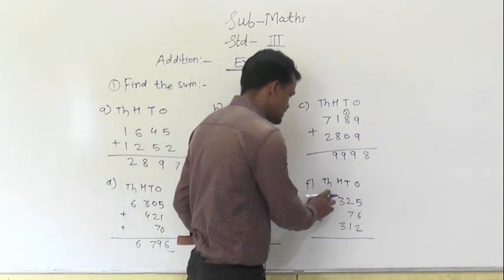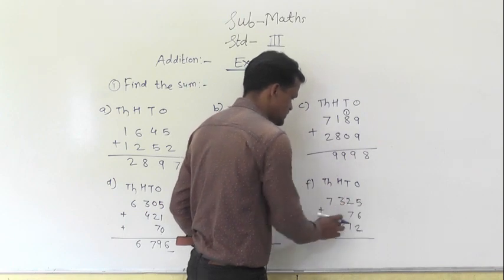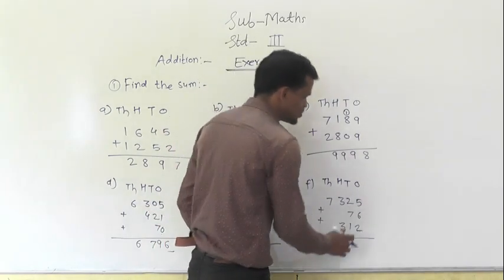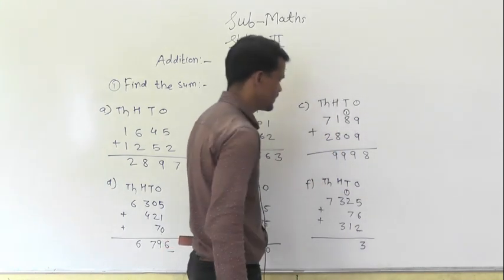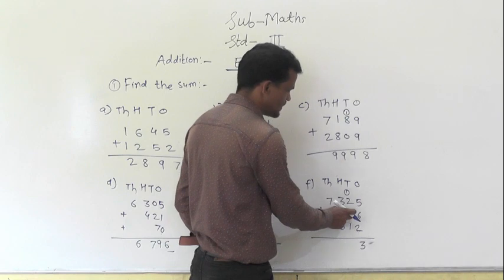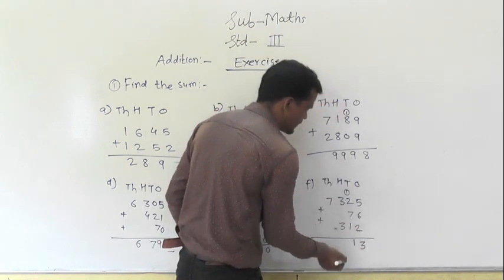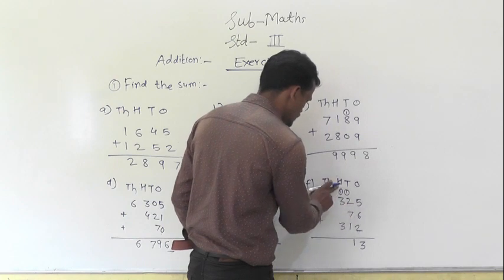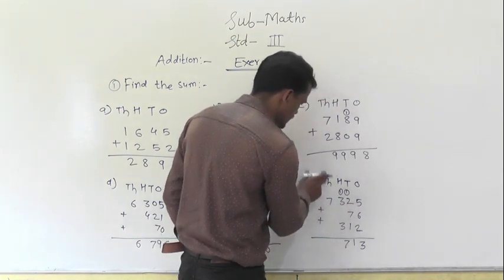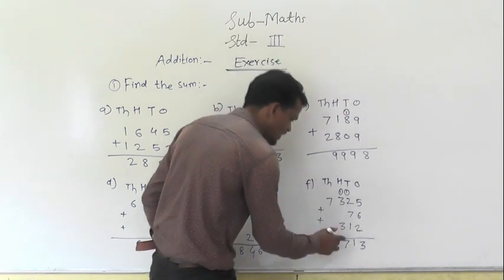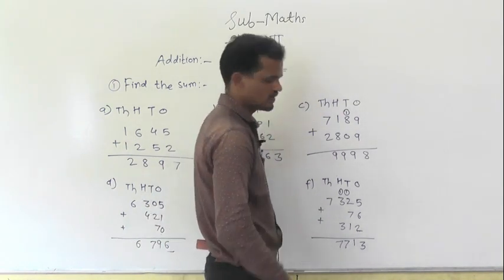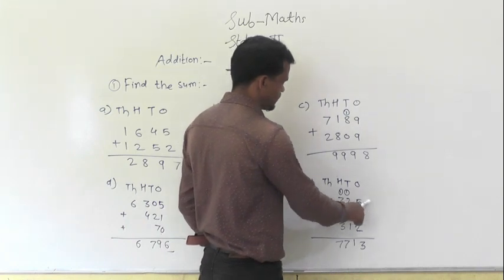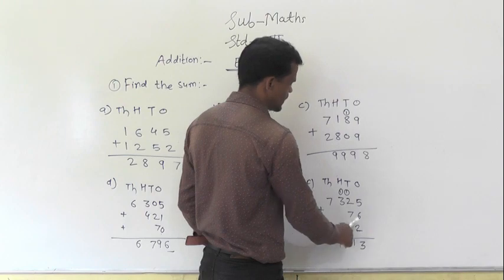F1: 7325 plus 76 plus 312. Start from the ones place. 5 plus 6 is 11, plus 2 is 13, write 3 here and 1 carry to the tens place. 2 plus 7 is 9, plus 1 carry is 10, plus 1 is 11, write 1 here and 1 carry to the hundreds place. 3 plus 3 is 6, plus 1 carry is 7. At the thousands place only 7, so write it down. 7713 is the sum of 7325, 76, and 312.